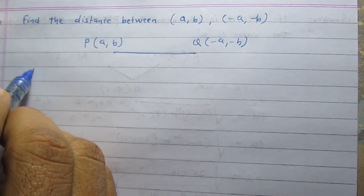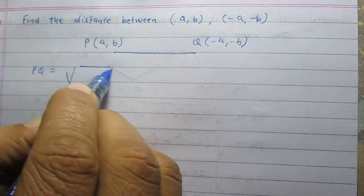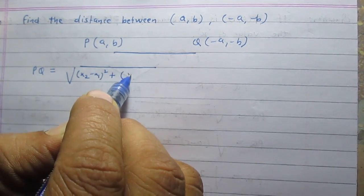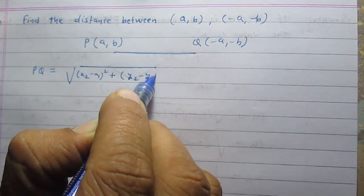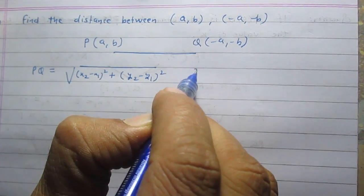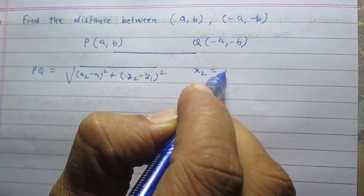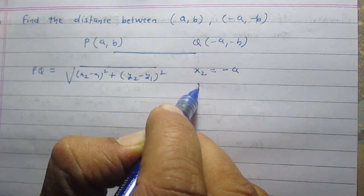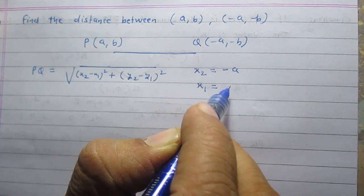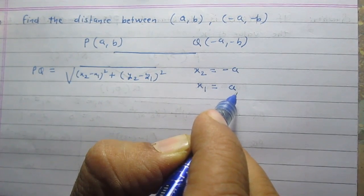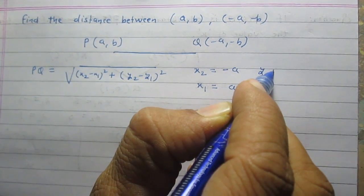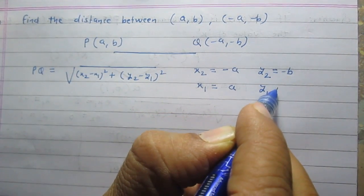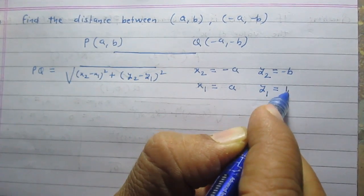According to the distance formula, the distance PQ is equal to the square root of (x2 minus x1) whole square plus (y2 minus y1) whole square, where x2 is the x-coordinate of point Q, which is -a; x1 is the x-coordinate of point P, which is a; y2 is the y-coordinate of point Q, which is -b; and y1 is the y-coordinate of point P, which is b.